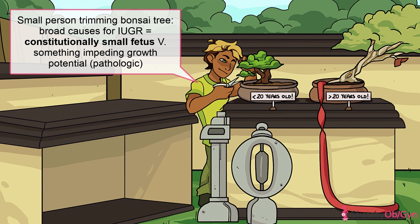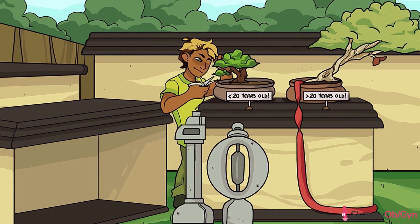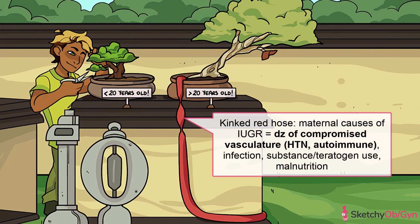Pathologic causes for intrauterine growth restriction fall into three categories: maternal causes, fetal causes, and placental causes. Maternal causes include maternal disease, substance and teratogenic medication use, infection, and malnutrition. Compromised maternal vasculature, whether from hypertension or an autoimmune disease, will lead to utero-placental insufficiency and decreased blood flow to the fetus. These fetuses usually have asymmetric IUGR, especially in cases of mothers with diseases that progress during pregnancy, such as preeclampsia.